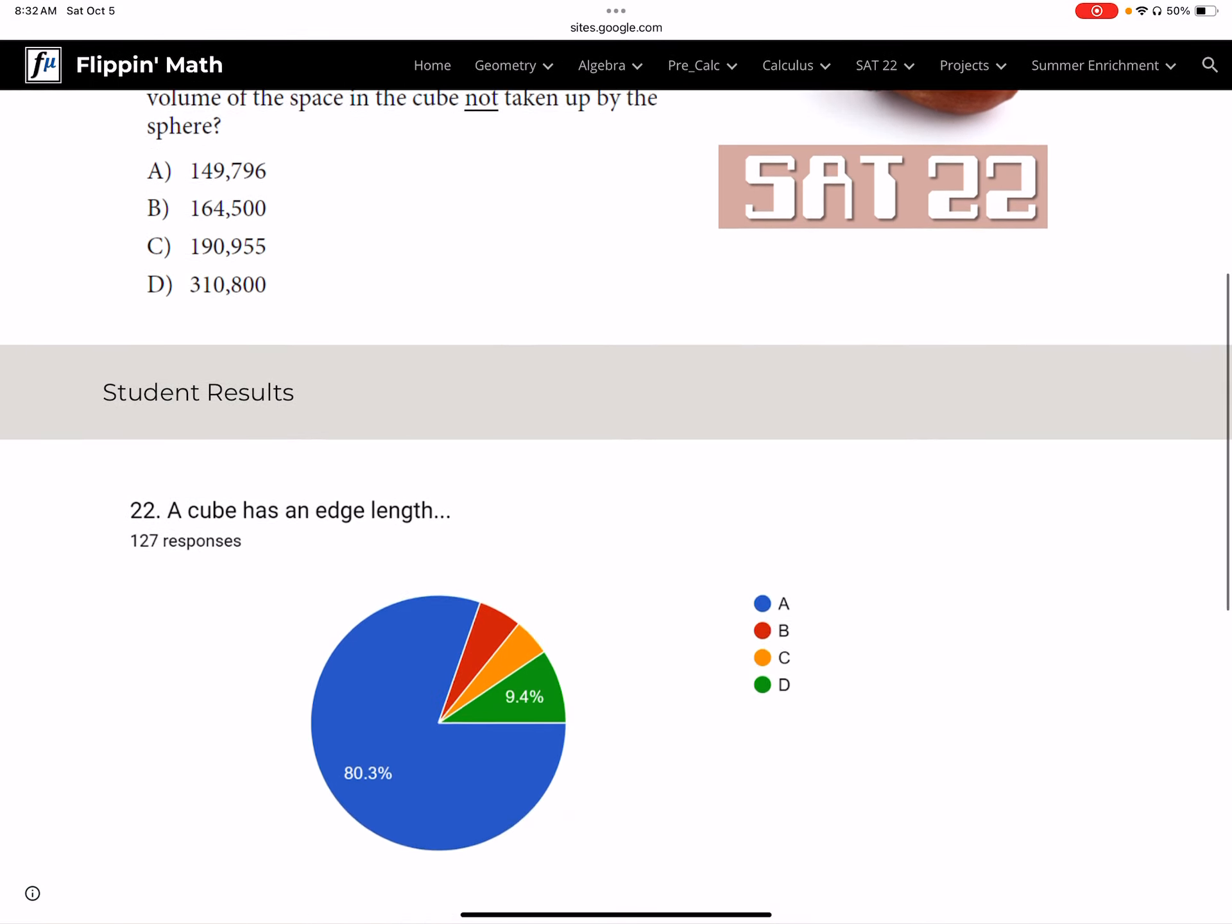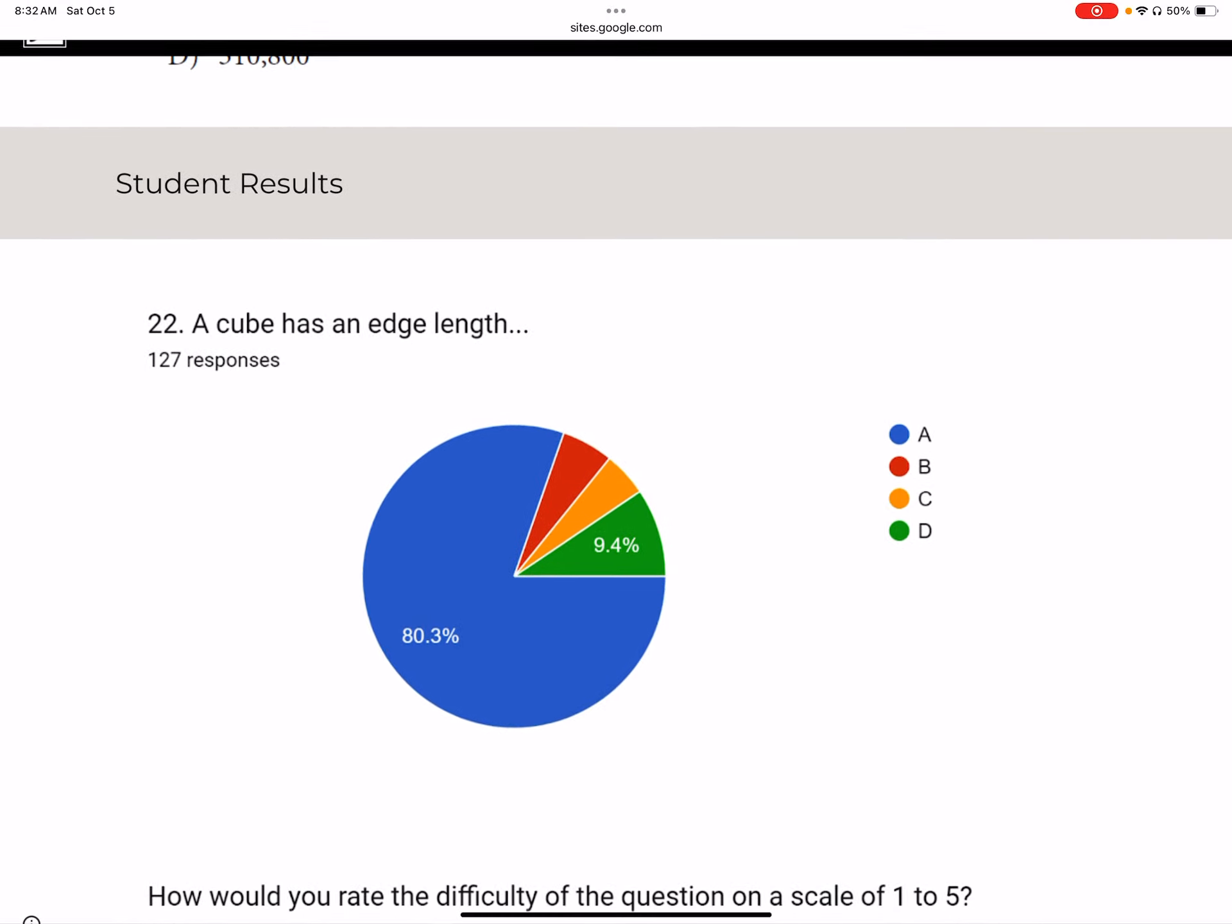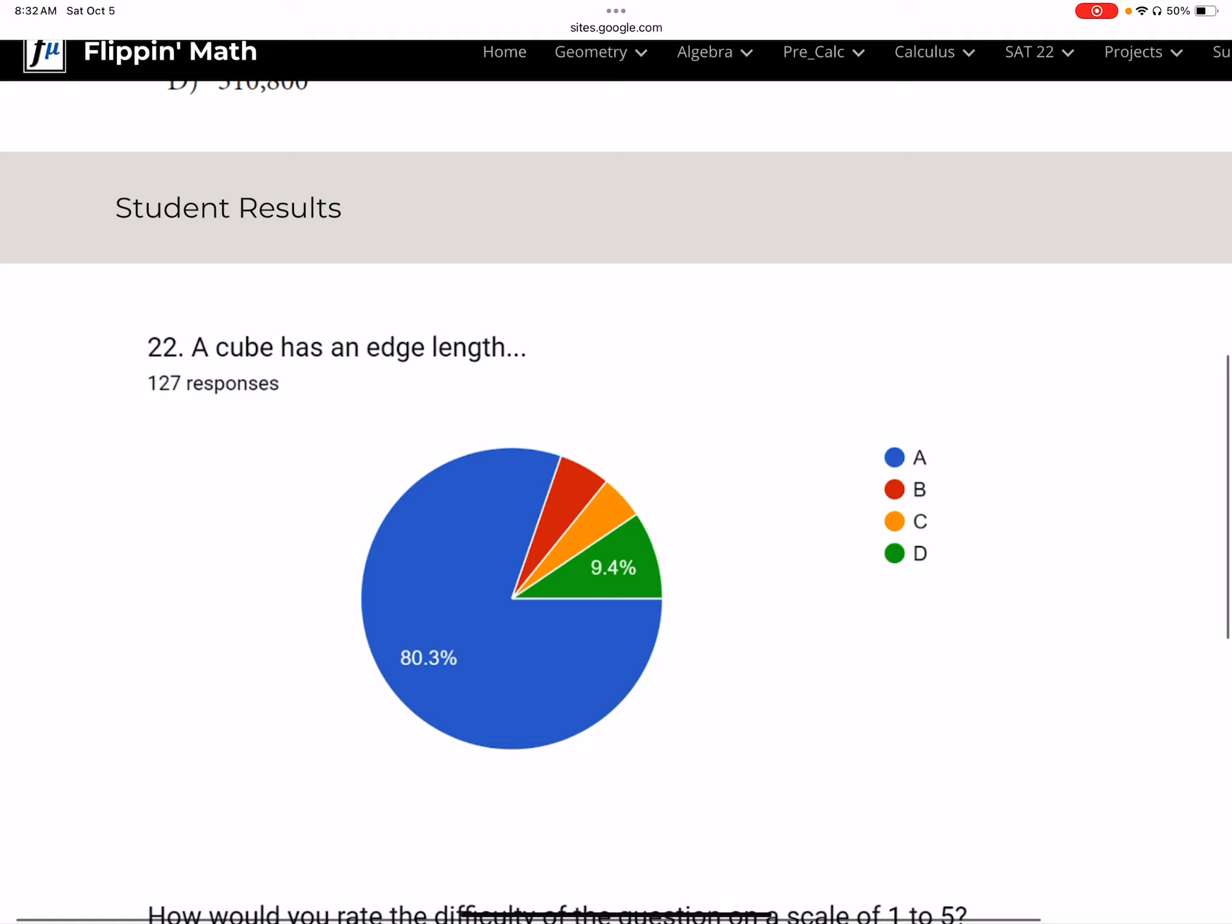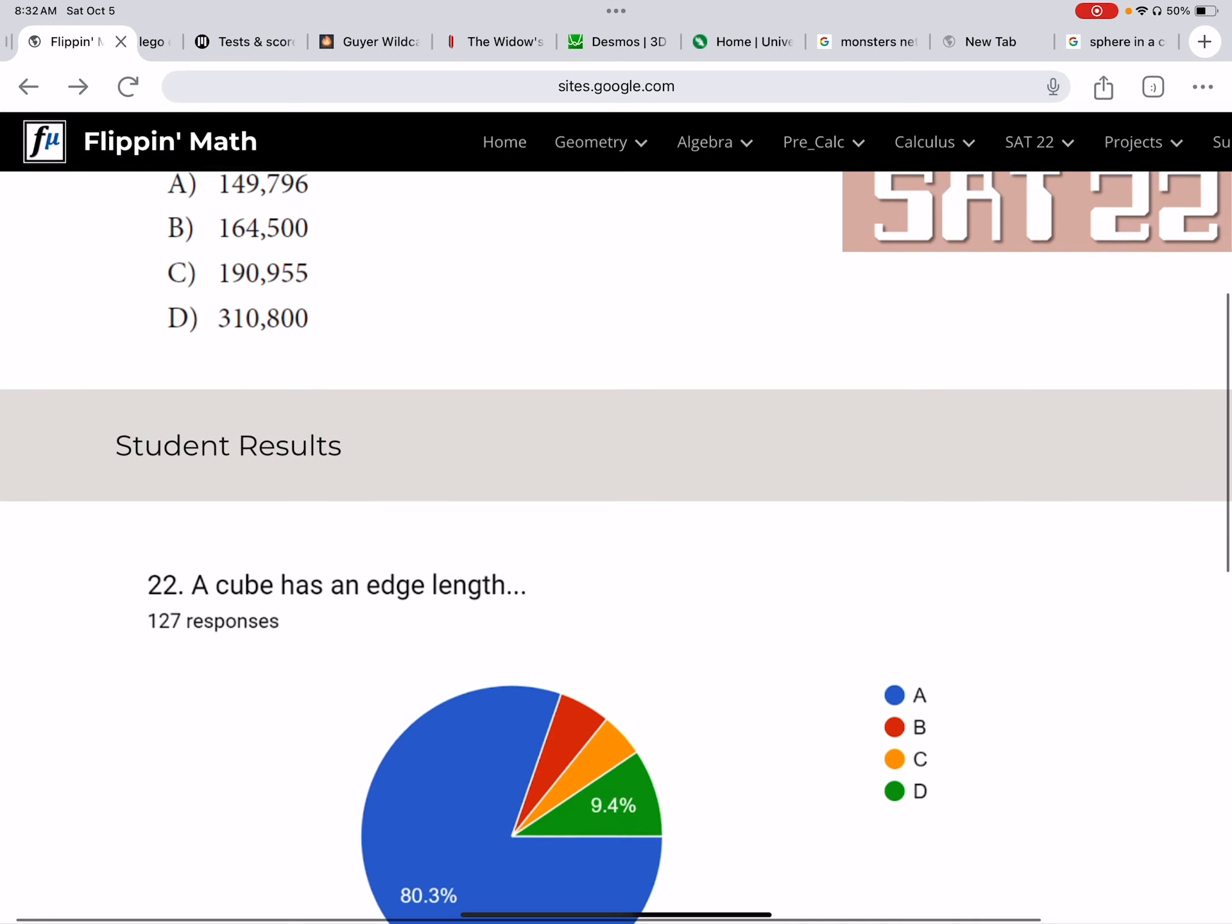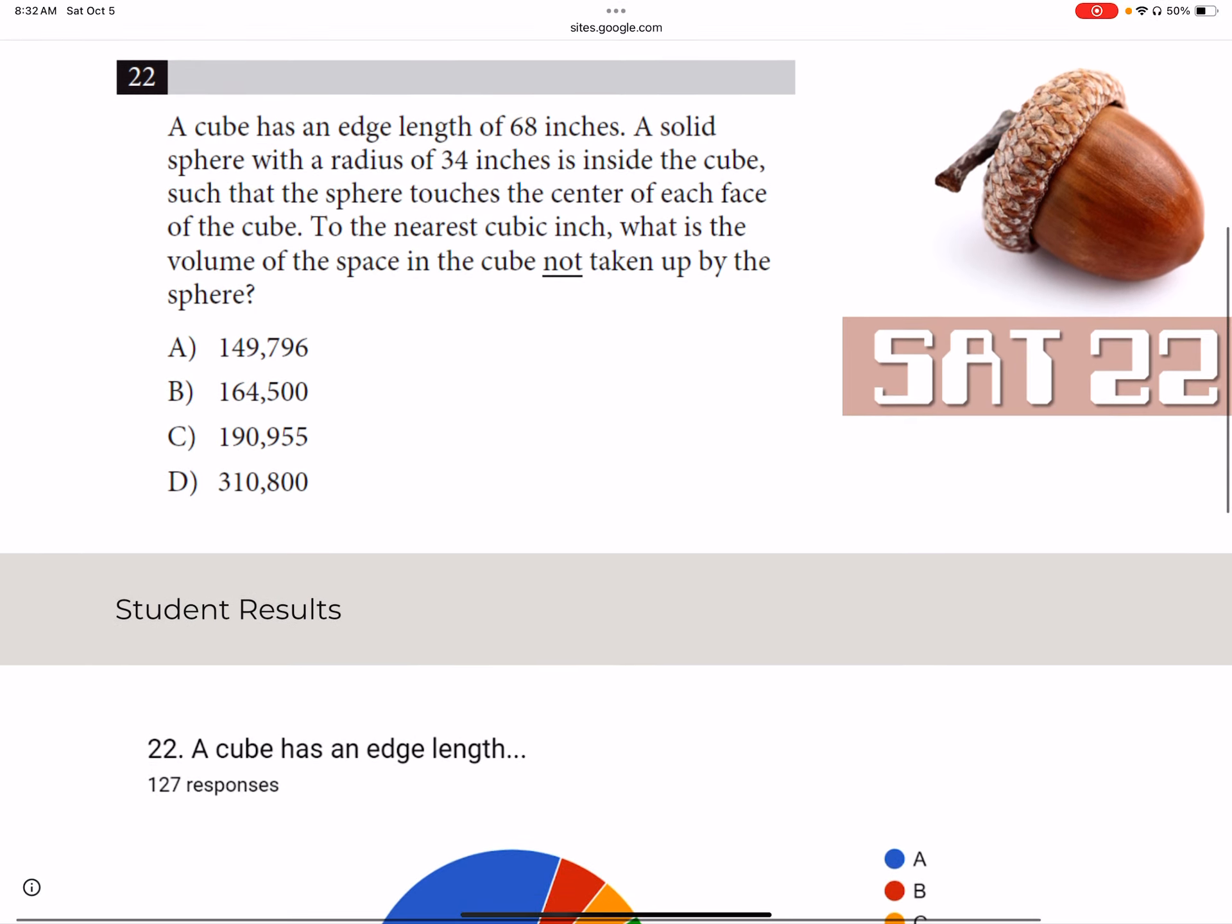Before we get into what our actual solution is, let's look at your results. And you can see there is a very clear winner here. Just a whisker over 80% of us thought that the answer choice was A, which is in fact the correct answer. Our runner-up, answer choice D, at 9.4%. It's not even close, but it is the second place winner here. And answer choice D, as we will see, is the one that you would probably eliminate first.